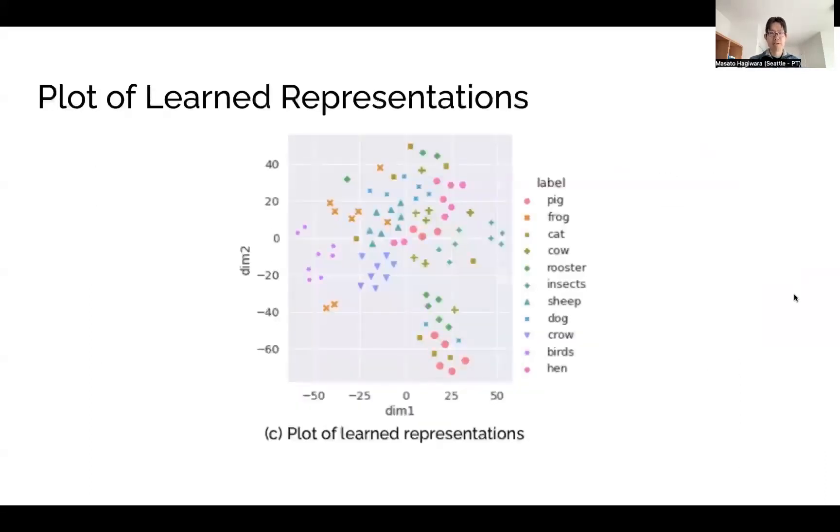Here we show the plot of learned representations from AVES. You can see that AVES was able to learn similar representations for the same and closely related animals, such as birds and crows, explaining the strong performance on many classification datasets.